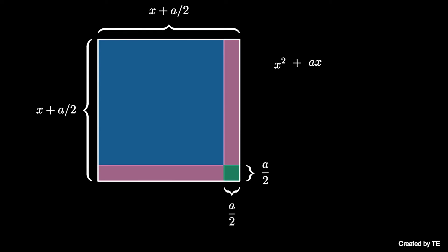Therefore, we see the original enclosed area is quantity x plus a over 2 squared minus the quantity a over 2 squared.